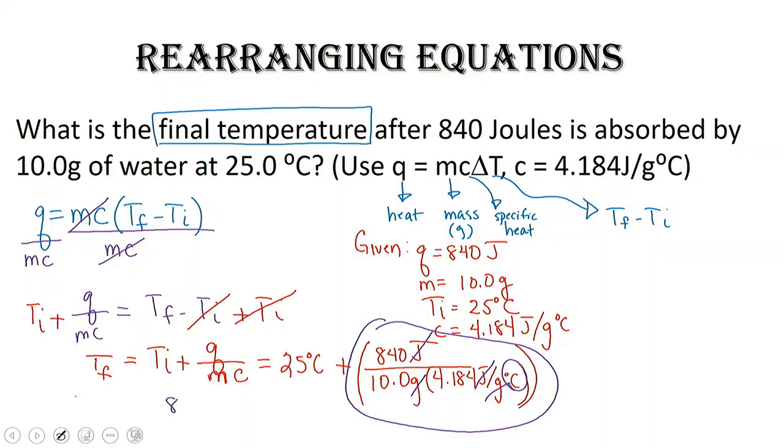When you put this in the calculator, you're going to do 840, not times, divided by, you're going to do 840 divided by 10.0 divided by 4.184.